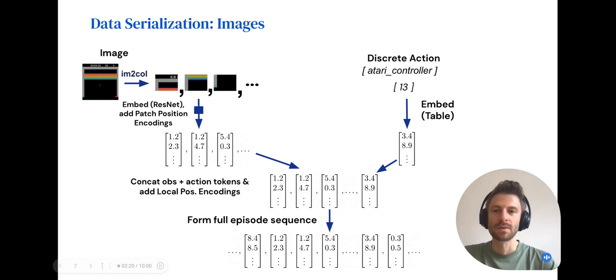To serialize images, we convert each image into a series of non-overlapping 16x16 patches. Each patch is processed by ResNet, which produces embedding vectors. We add patch positional encodings, which I'll discuss in the following slide, to these embedding vectors and concatenate them with actions as described in the previous slide on features. In this example, the action is already a discrete integer, so it doesn't need to be discretized and we can directly retrieve its embedding vector.